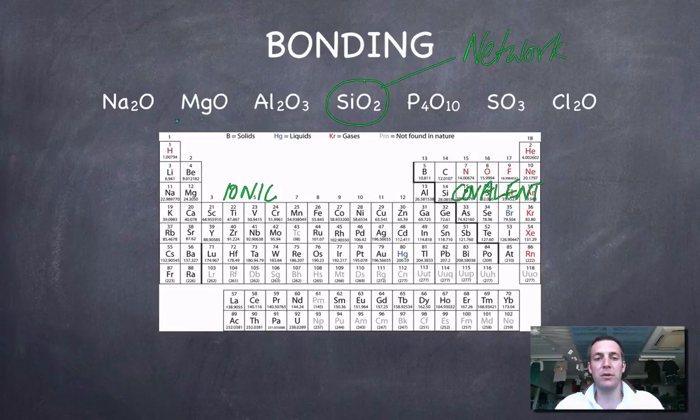So if you were asked to describe how the bonding or the nature of the bonding changes across this period amongst these oxides, we're starting off with ionic lattices, we're going through a covalent network, and then ending up with covalent molecular substances.